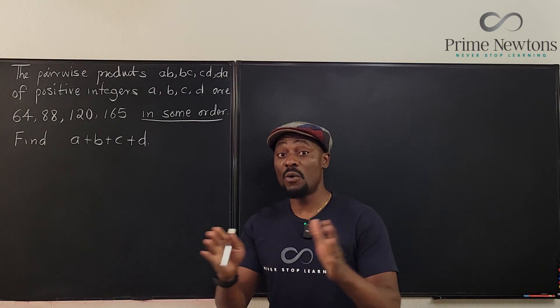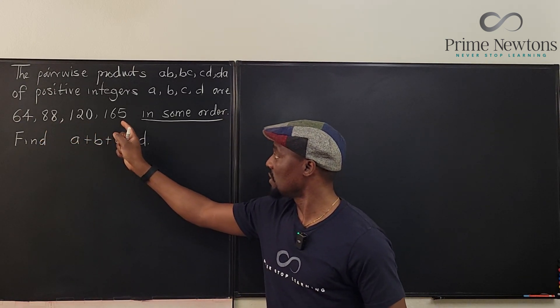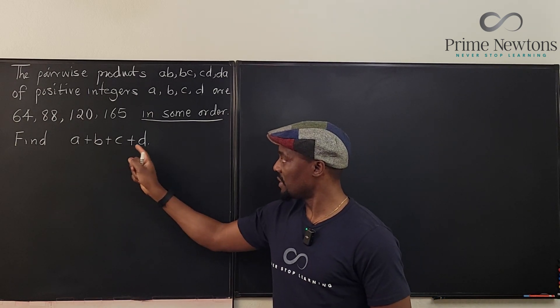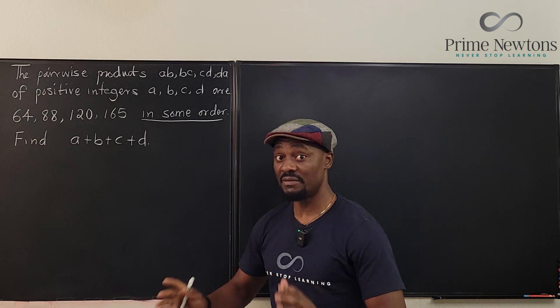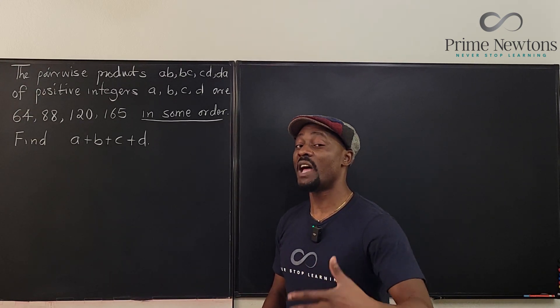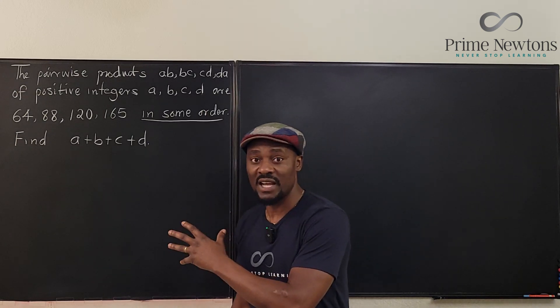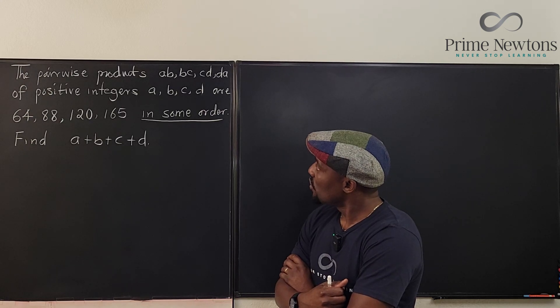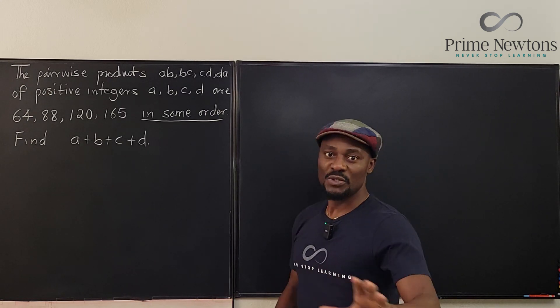Here, we have pairwise products to be 64, 88, 120, and 165, and I'm supposed to find A plus B plus C plus D, and remember each of these numbers is a positive integer, so there are no fractions and there are no negatives, and that makes our life a lot easier.